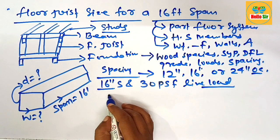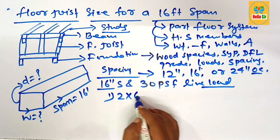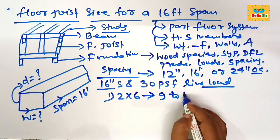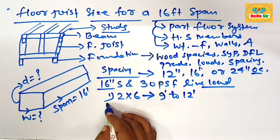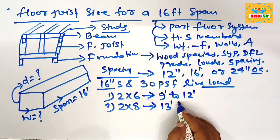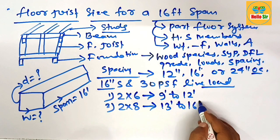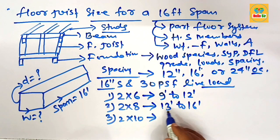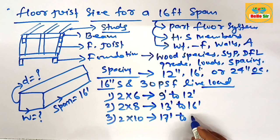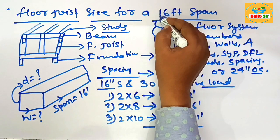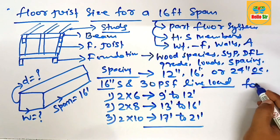A 2x6 dimensional lumber can span from 9 to 12 feet, a 2x8 can span about 13 to 16 feet, and a 2x10 dimensional lumber as floor joist can span about 17 to 21 feet. This is the common rule, but you have here a span length of 16 feet.